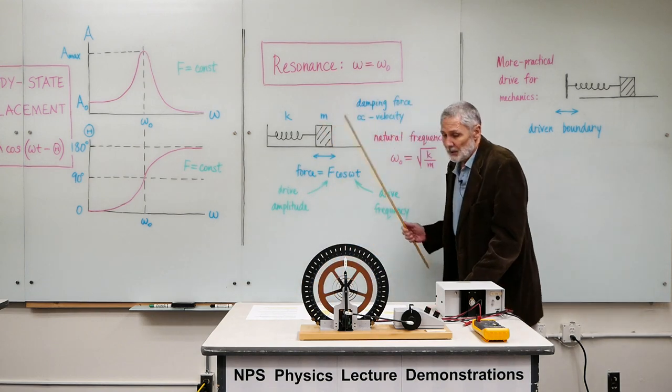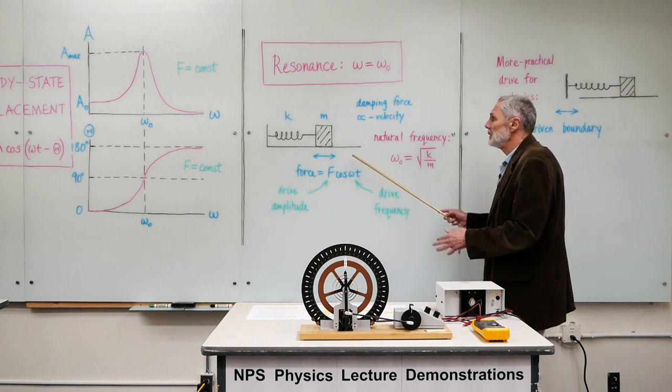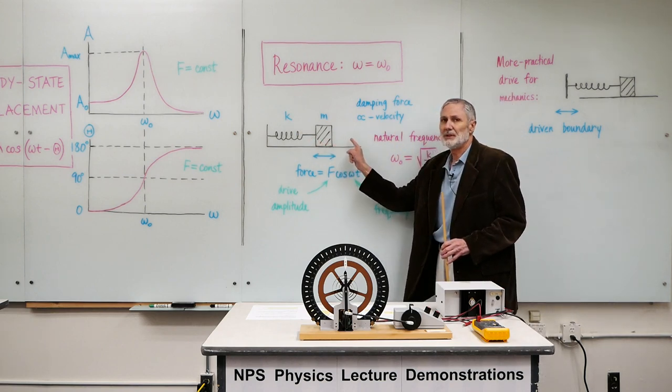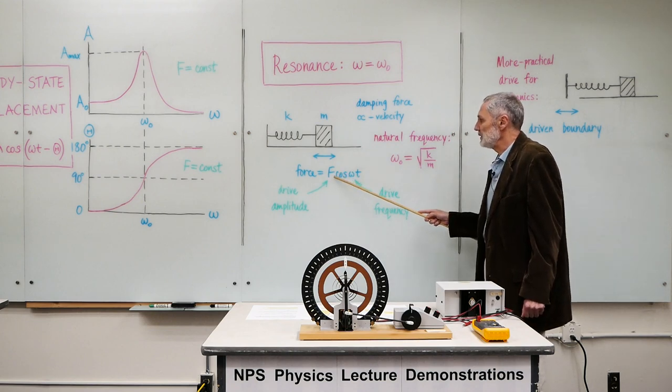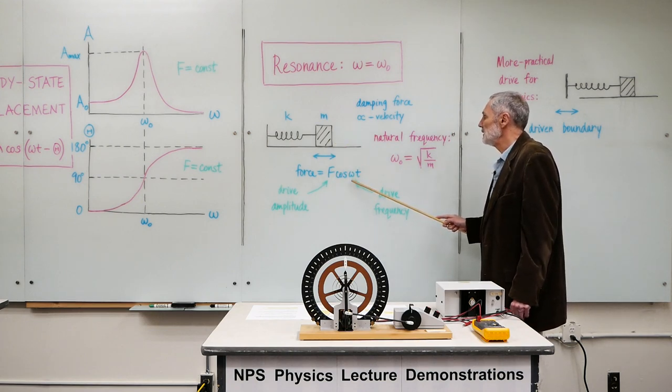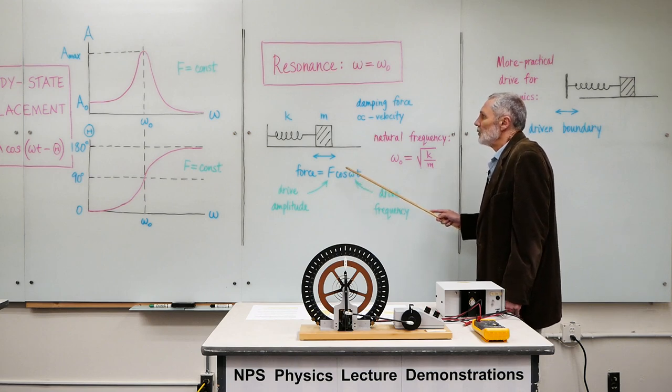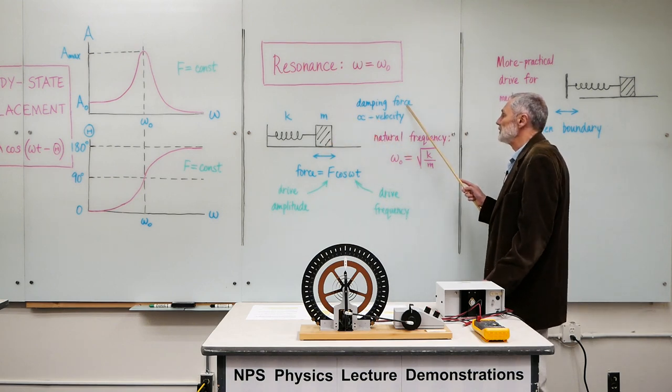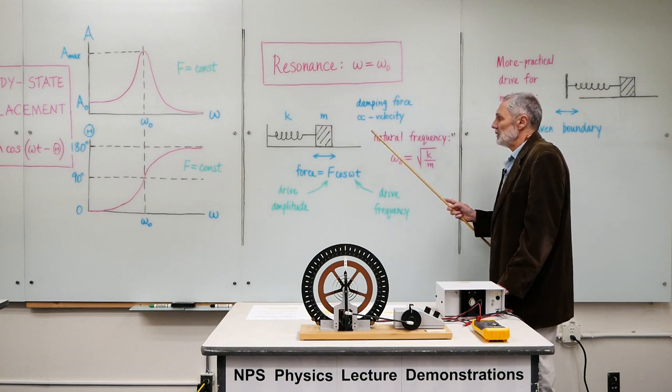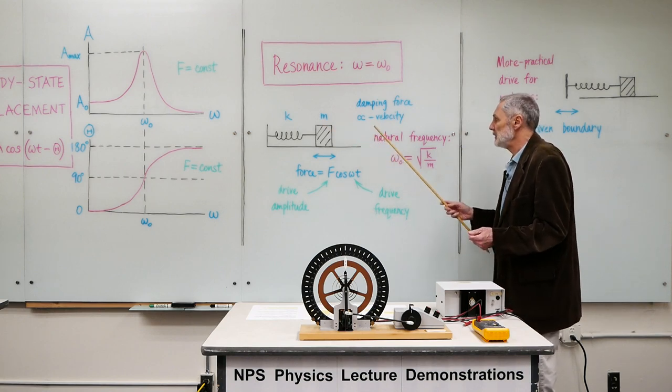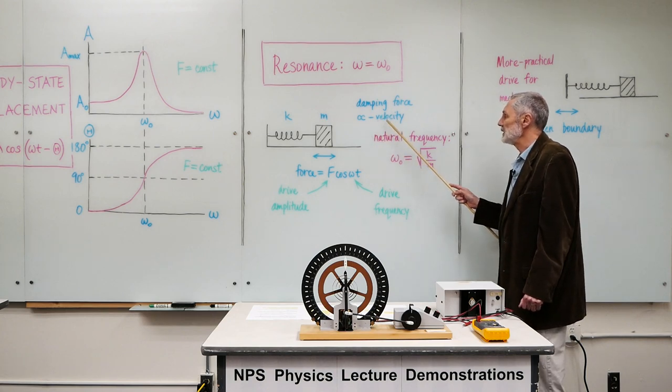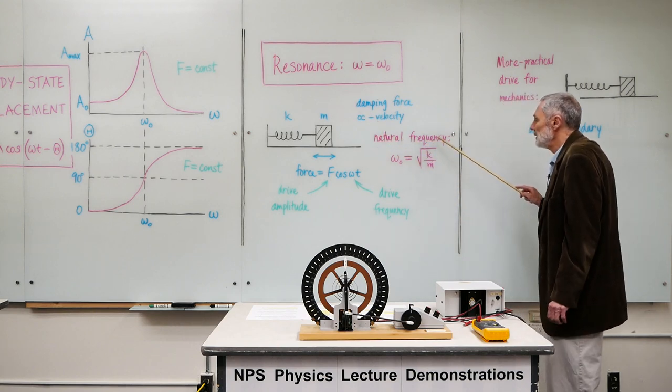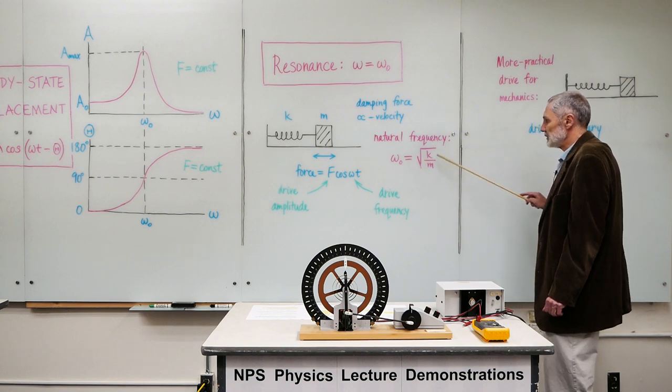To understand this, we consider the standard model of an oscillator. We've got a mass and a spring. An oscillatory force is exerted on the mass. This F here is the drive amplitude, and omega is the drive frequency. We're going to see in a moment that we have to include damping. The natural frequency here is the square root of the stiffness divided by the inertia, the square root of k over m.